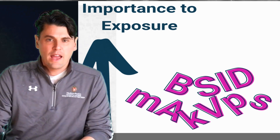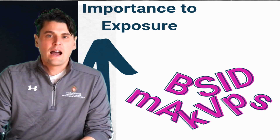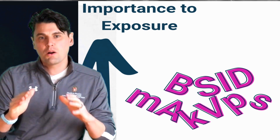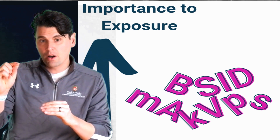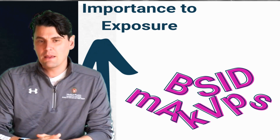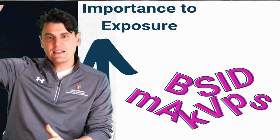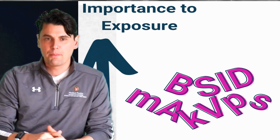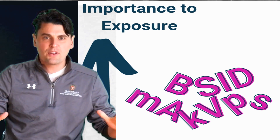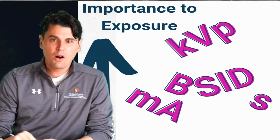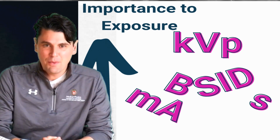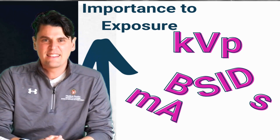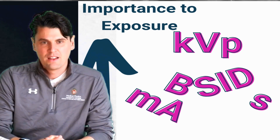The first question is: how important are these parameters to the exposure? Specifically, if we change one parameter, is it going to have a big impact or a small impact? Let's put these in order from biggest impact at the top to smallest at the bottom. From everything we've talked about, number one with a bullet is KVP. The exposure in x-ray imaging is exquisitely sensitive to KVP.